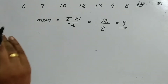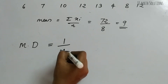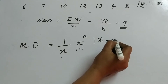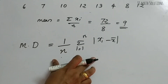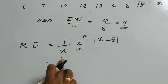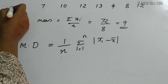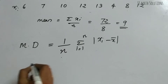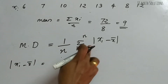Now we need to calculate the mean deviation. The formula for mean deviation about the mean is: (1/n) × summation from i=1 to n of |xi − x̄|. This is the mean deviation about the mean for ungrouped data. The absolute value means no negative values — only positive values. So we compute xi minus x̄ where x̄ is 9, and take the absolute value of each result.